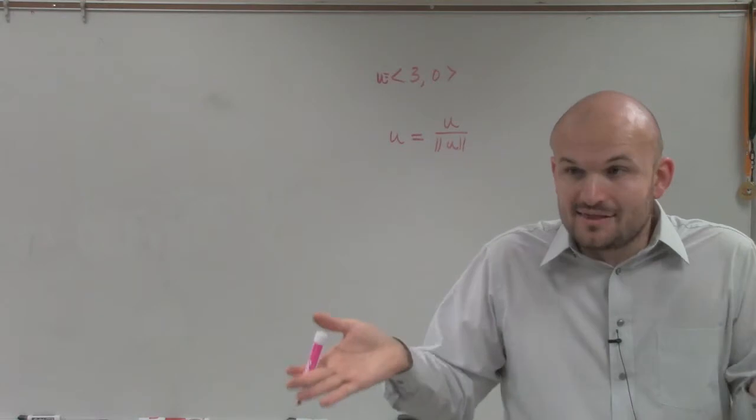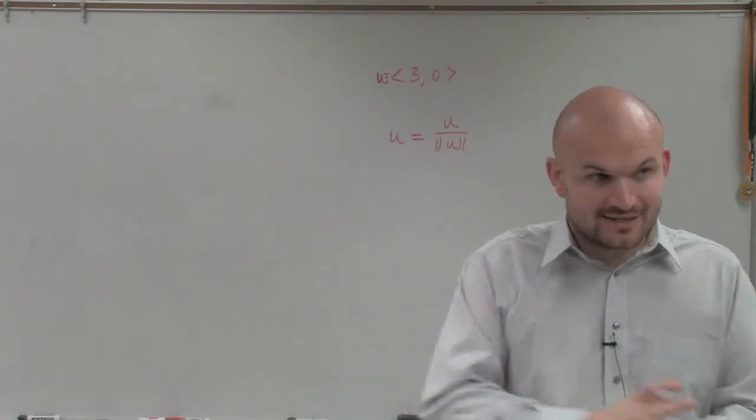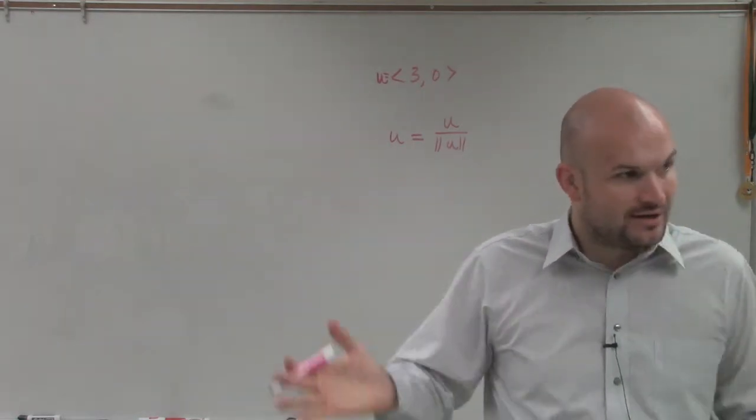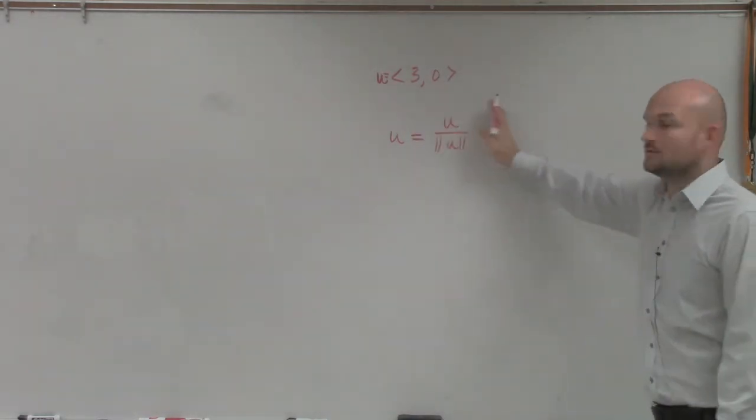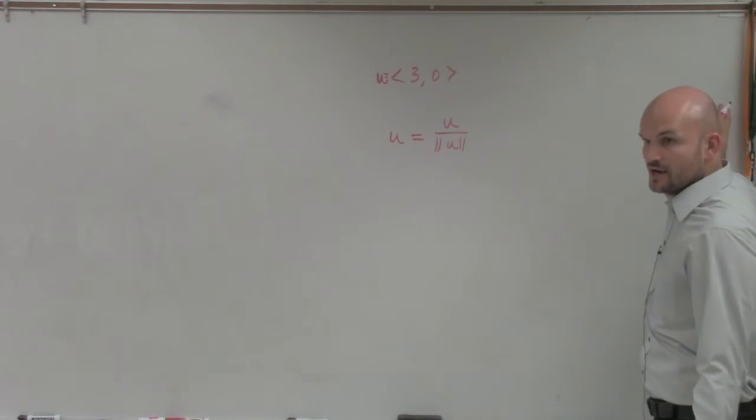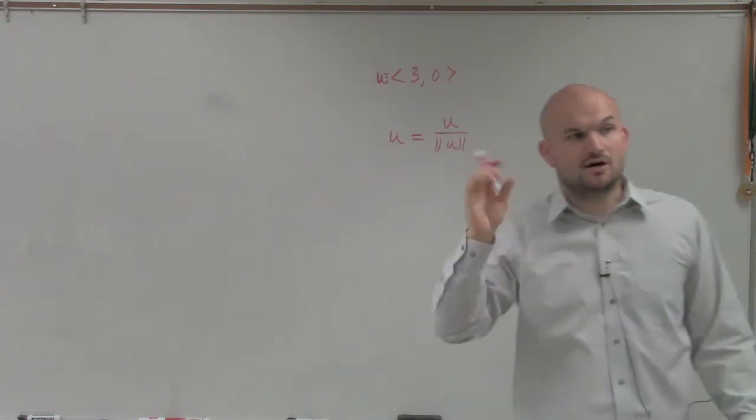But remember, a unit vector has a length of 1, right? That is the total length of a unit vector is 1. So obviously, you can see if we plotted this vector right now, 3 comma 0, that has a length of 3. We want to write it so it has a length of 1.